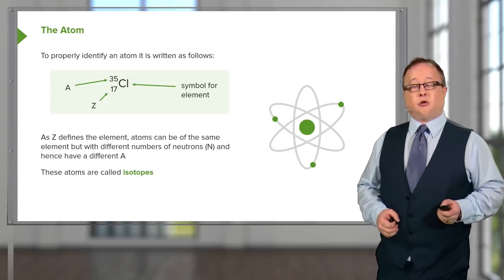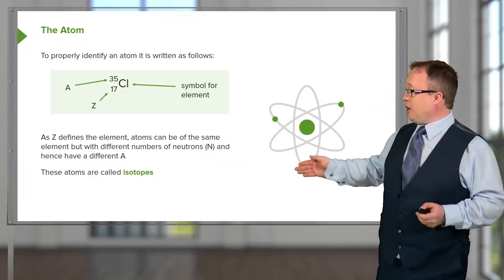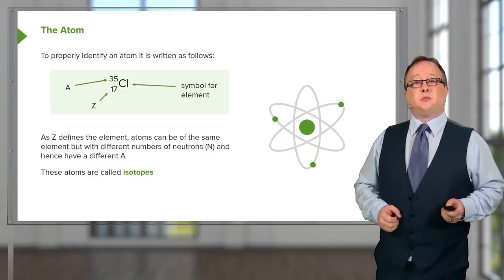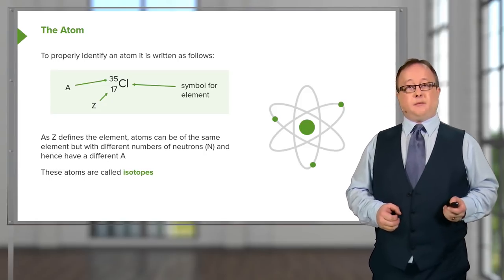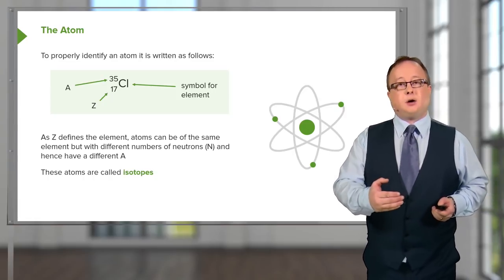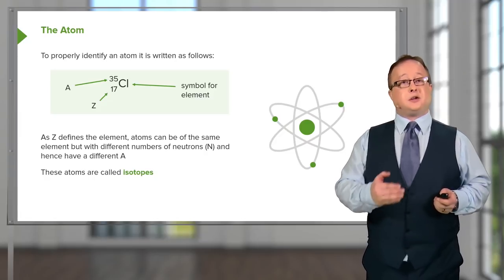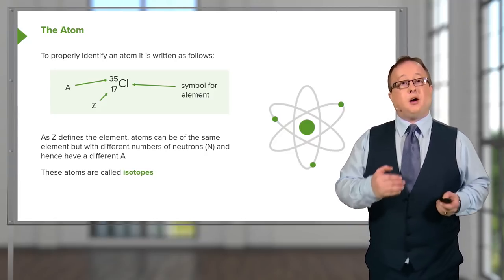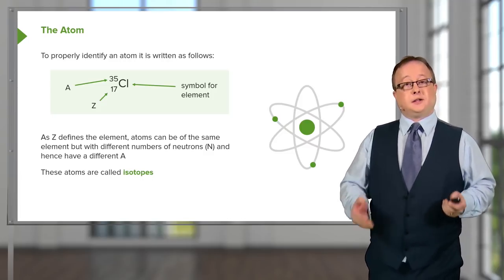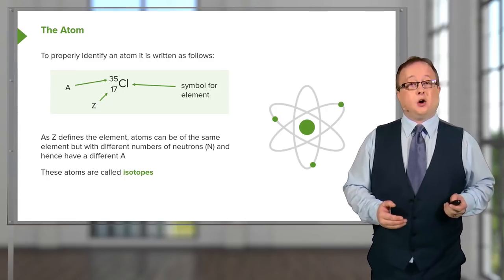We have an example of the element chlorine. The larger number at the top is A — the atomic mass number. The lower number is Z — the atomic number. Whenever you're looking at this, if you get confused as to what is an atomic number and what is an atomic mass number, the atomic mass number is always larger. So just find the largest number — that is the mass, correlating to the number of protons plus neutrons. Z is the atomic number, correlating to the number of protons.